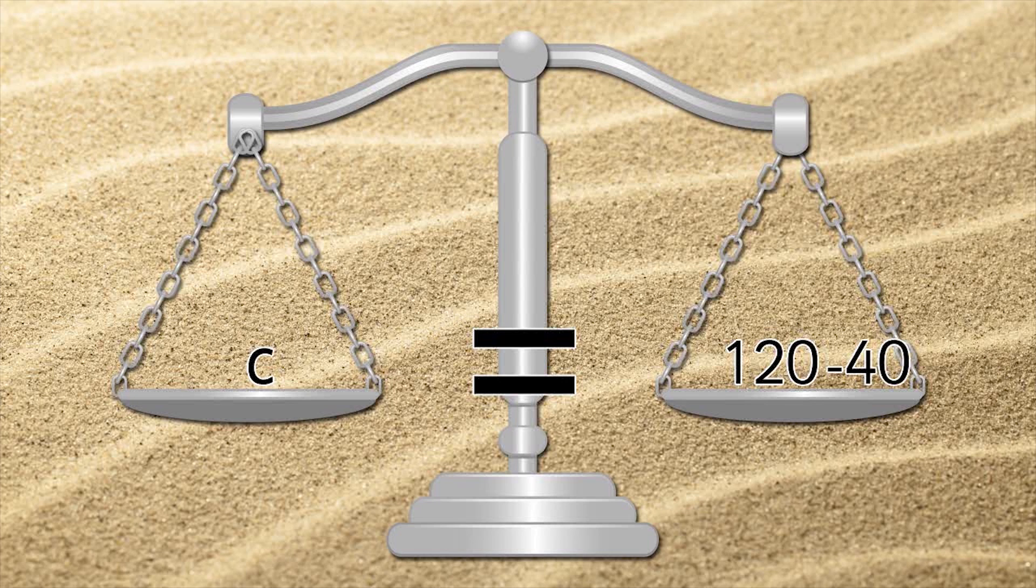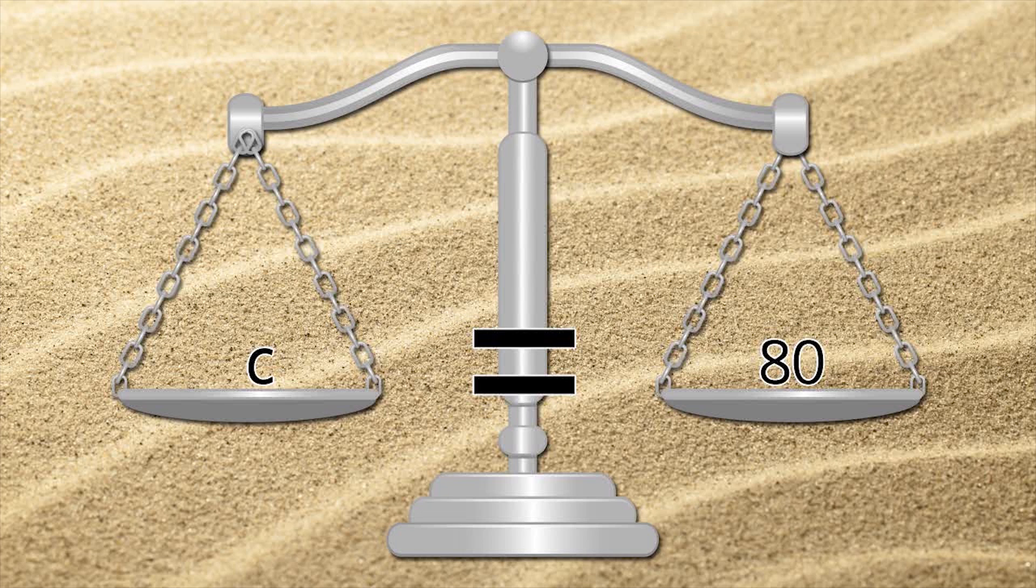120 minus 40 equals 80. C equals 80. That's how many children there are at the hotel.